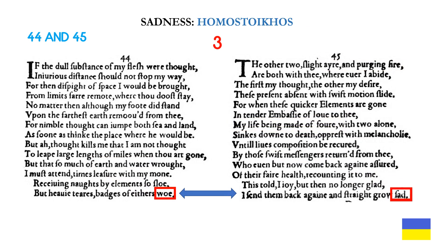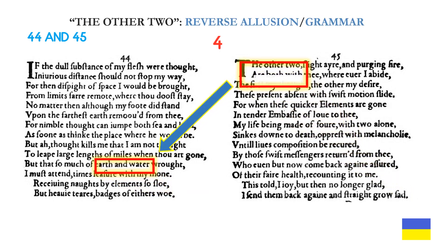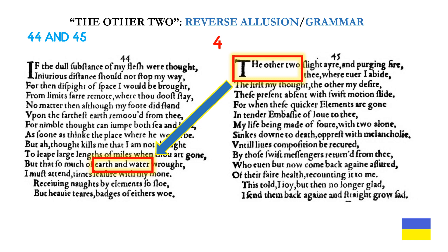The theme of sadness gives us our third connection: it appears in both poems on line 14. Sonnet 44 has woe; sonnet 45 has sad. As proof that these poems must be read in the same order, we have a reverse allusion in the phrase the other two in sonnet 45 — grammatically important because you cannot mention the other two, air and fire, as elements in sonnet 45 without previously mentioning earth and water in a sonnet beforehand. It is impossible to do that unless you want readers flipping back and forth between pages.